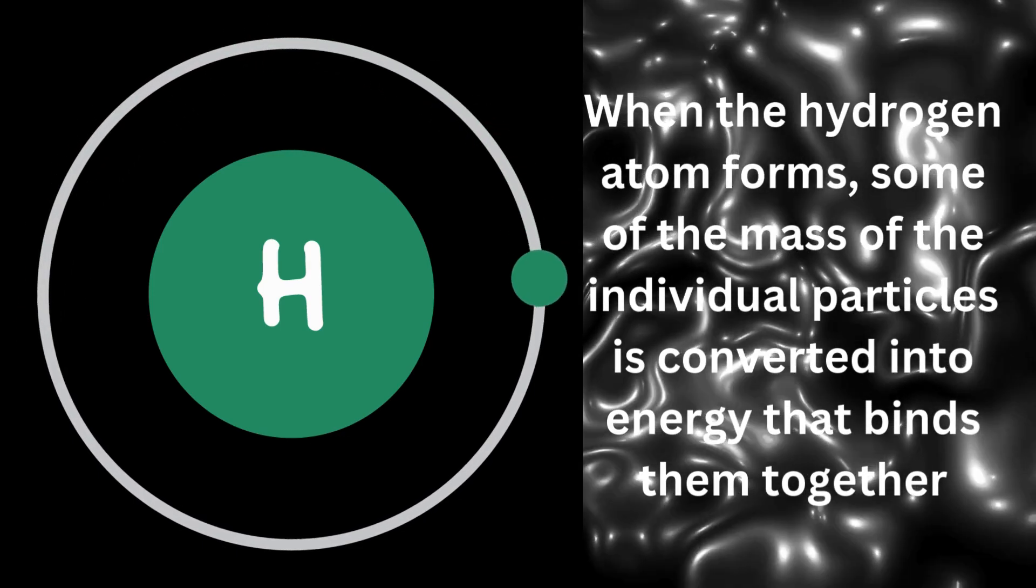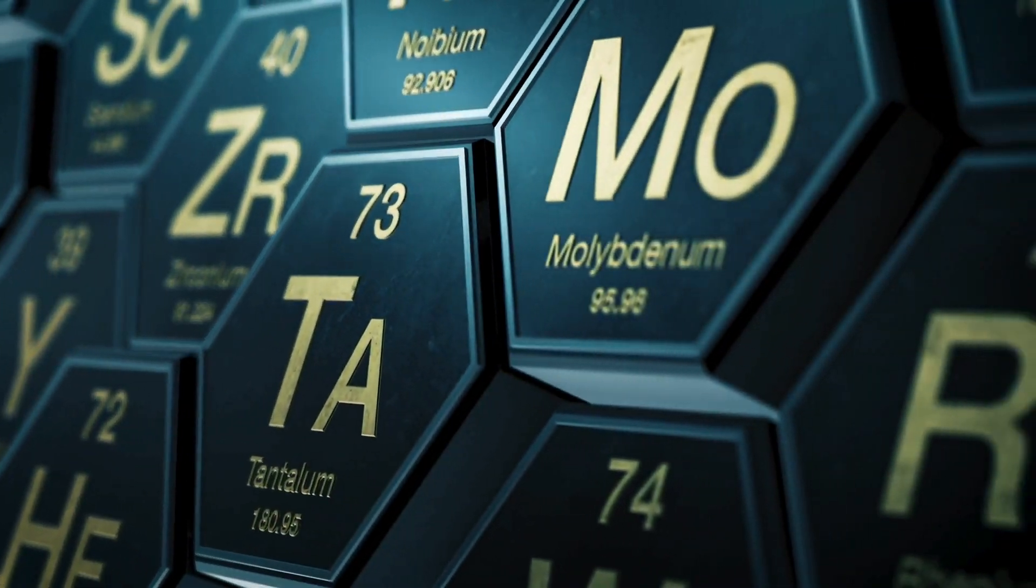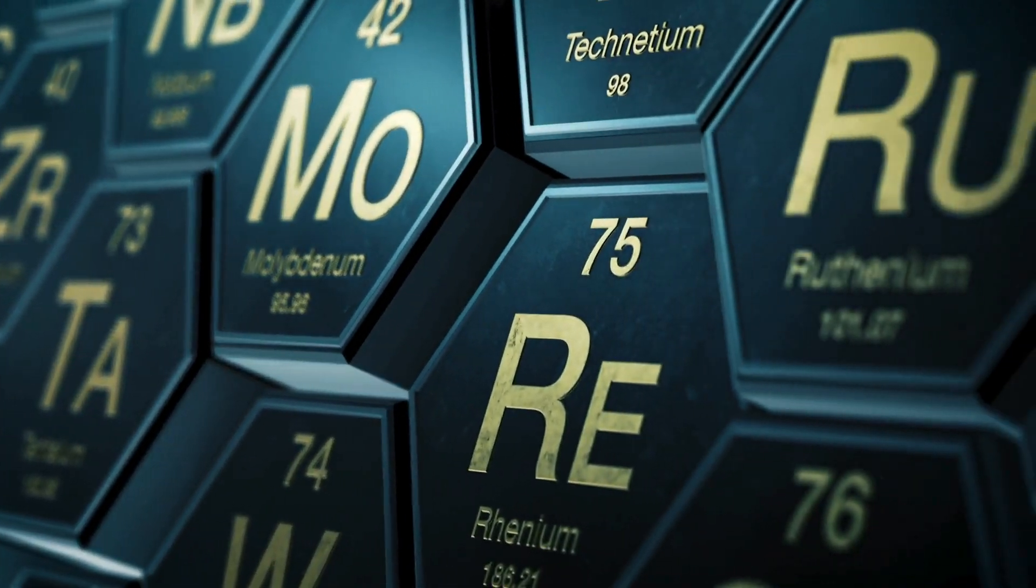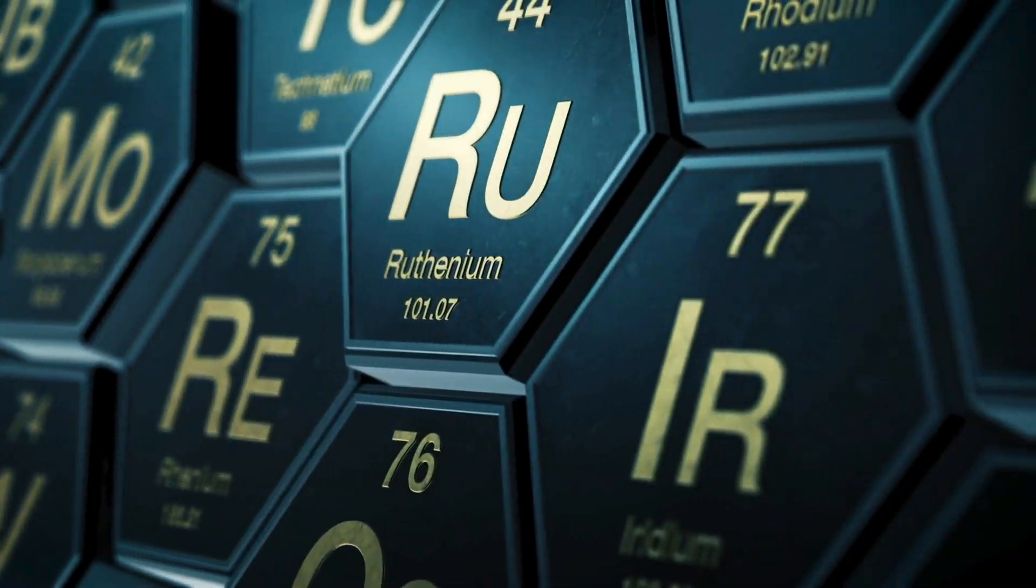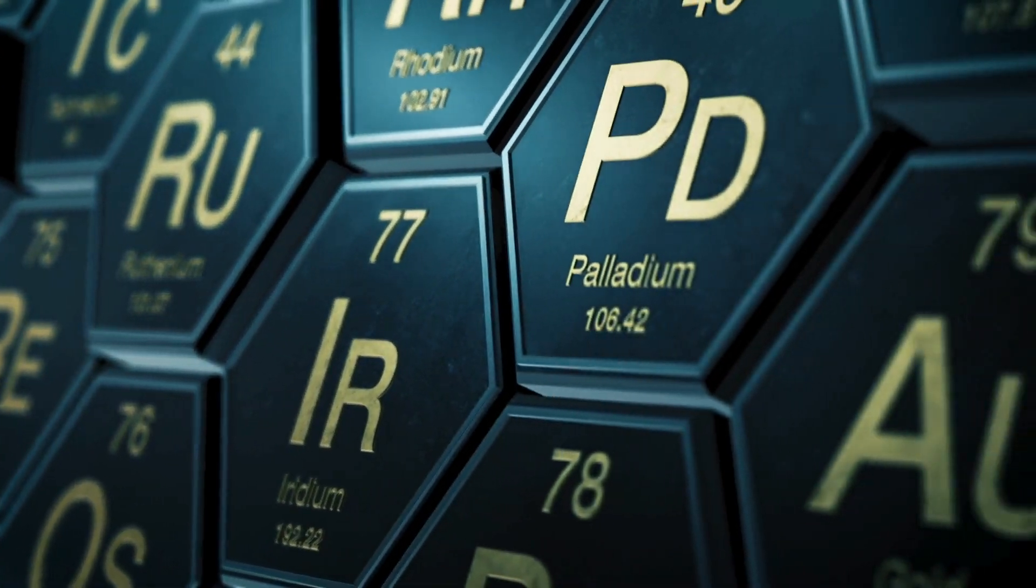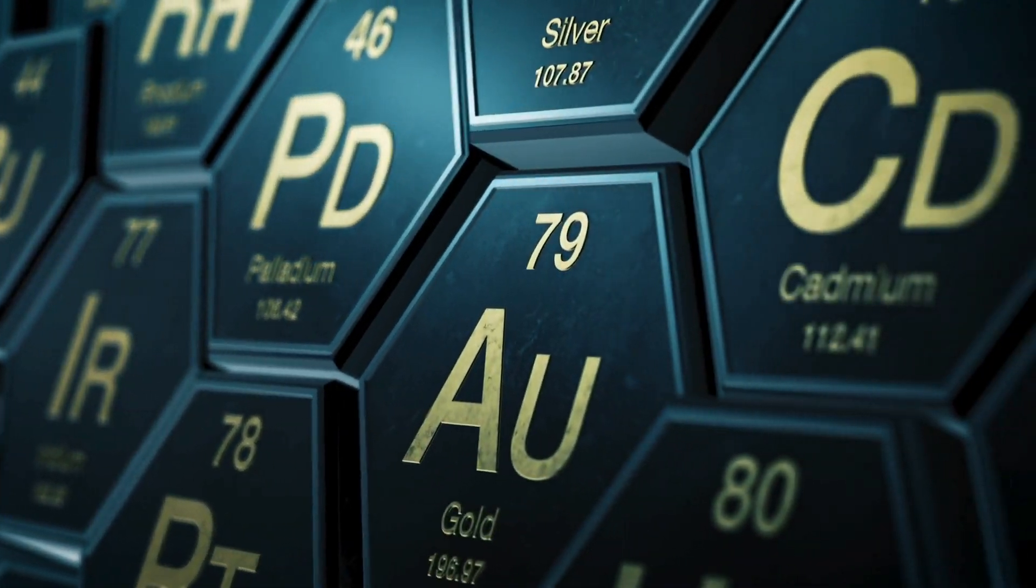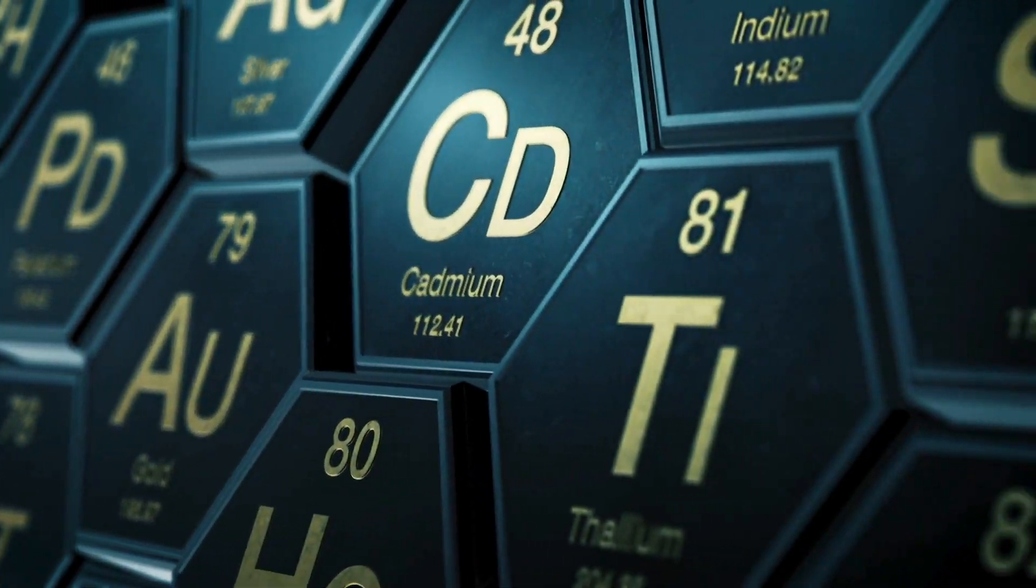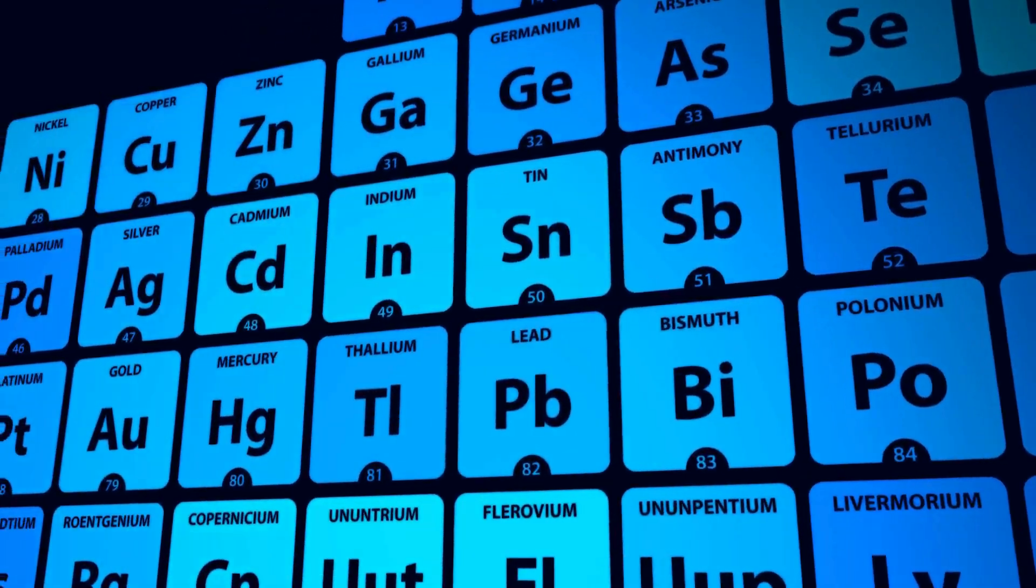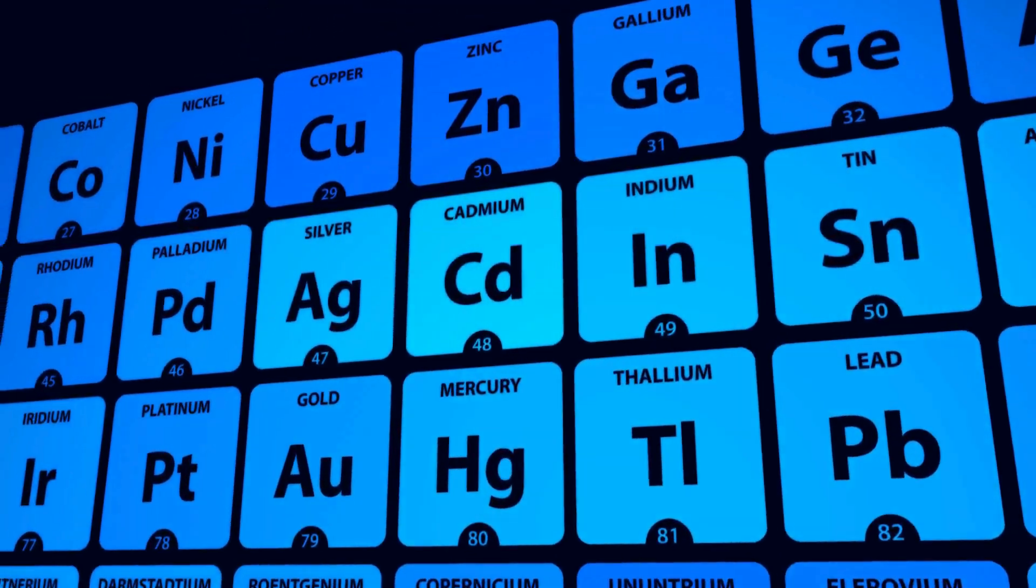As you move across the periodic table, elements become more complex with more protons and neutrons. Each added nucleon, proton or neutron, contributes to the overall binding energy and therefore, the mass defect. So, this concept is true for almost every single element in the periodic table.